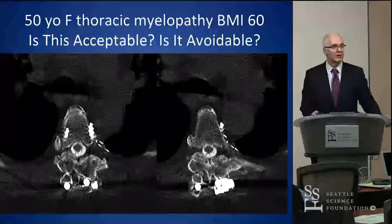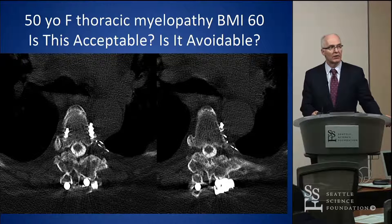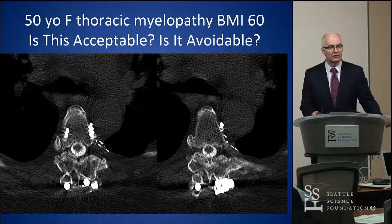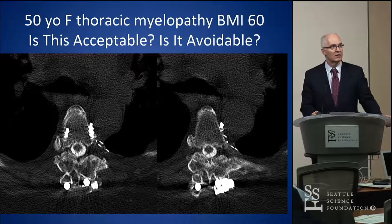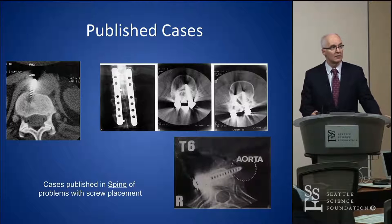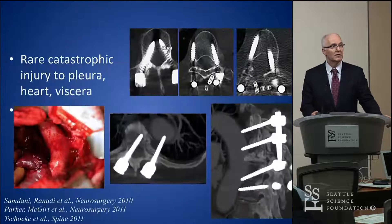In the thoracic spine it's a little tougher. The thoracic aorta looks a little enlarged and the screws are right next to it — another patient referred to me. Her BMI was high, so it was tough. There are lots of published cases of screws in places where we really don't want them to be, and sometimes they cause rare but catastrophic problems.